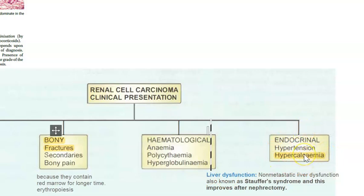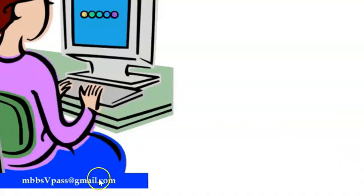Endocrine manifestations include hypertension due to the renin-angiotensin system and hypercalcemia because the kidney helps in calcium absorption. Liver dysfunction associated with renal cell carcinoma is called Stauffer's syndrome; it can improve after nephrectomy. The prognosis is that 70% of patients survive up to five years, but metastasis indicates a poor prognosis.